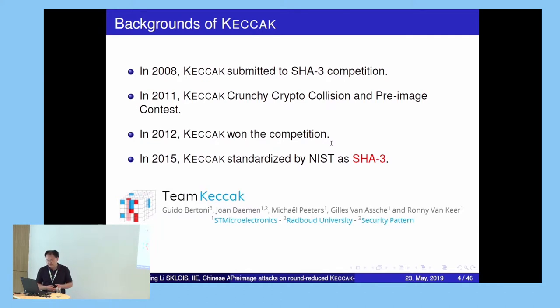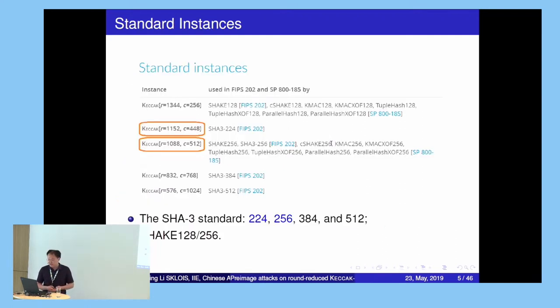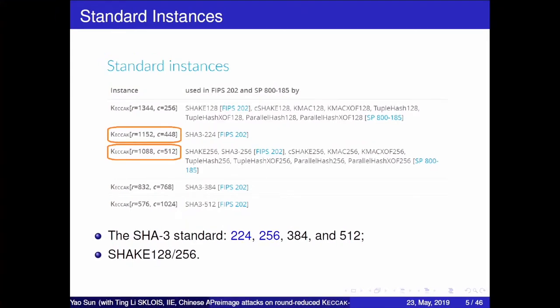After MD5 and SHA-1 were broken, NIST held the SHA-3 competition. There were 64 algorithms submitted. Four years later, Keccak won, and three years after that it became SHA-3 officially. SHA-3 and Keccak have many different instances, differing in the length of the output digest. Our work focuses on the instances with digest lengths of 224 and 256.